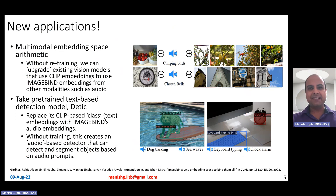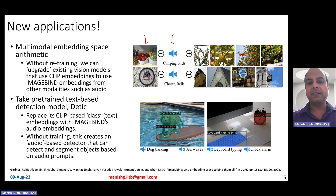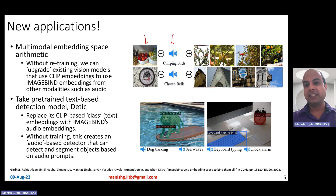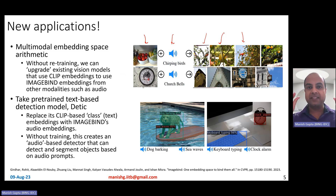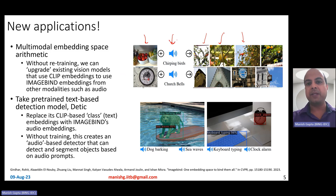What new applications does ImageBind enable? You can take an image of a basket of fruits, combine it with the ImageBind representation for chirping birds audio, and generate images that look like birds with fruits or trees. This is multimodal embedding space arithmetic — you don't need to retrain your CLIP model. You can upgrade your existing CLIP or DALL-E model to use ImageBind embeddings from other modalities like audio, conditioning the image generation process to combine semantics of both.